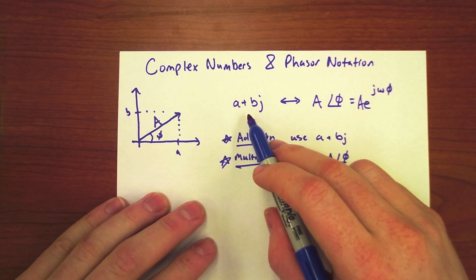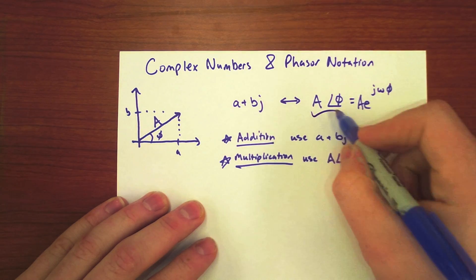We can easily go from a plus bj Cartesian to what we call phasor notation.